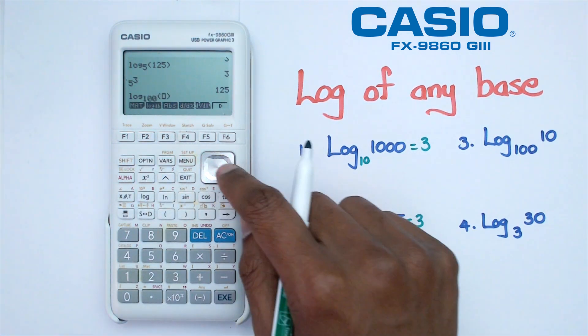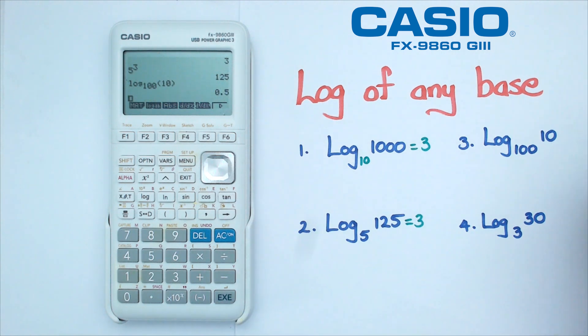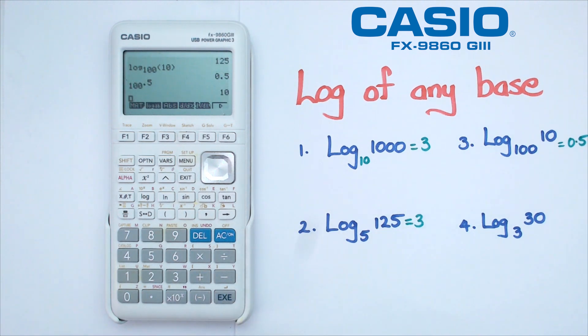Now in this case, I'm going to put in 100 as my base and 10 as my number there. I'm getting 0.5. The reason is because if we take 100 to the power of 0.5, we're going to get 10.